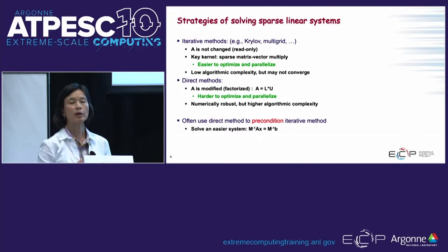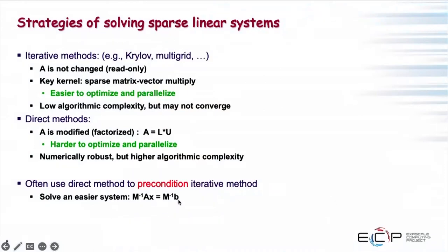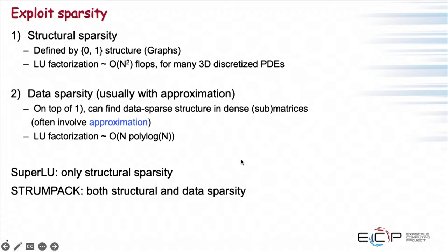Combining the two approaches is necessary nowadays for multi-scale and multi-physics applications, where neither one alone can work purely. The idea is to use the direct solver to find a preconditioner — either an approximate factorization or incomplete factorization — so the eigenspectrum of the transformed linear system becomes much nicer with a nice cluster of eigenvalues, and then GMRES or Krylov methods converge very fast.